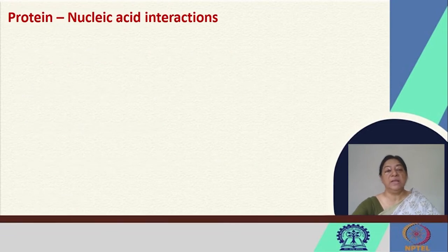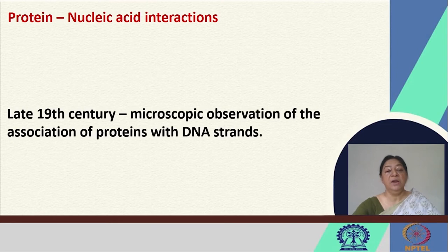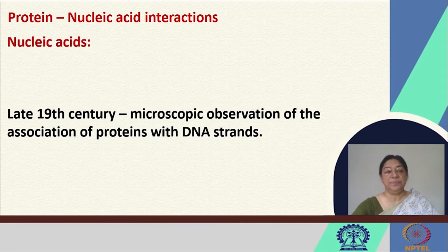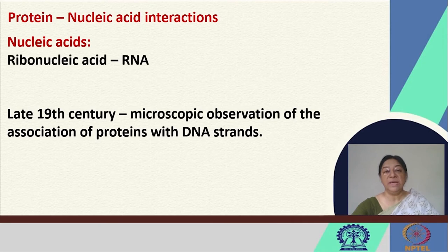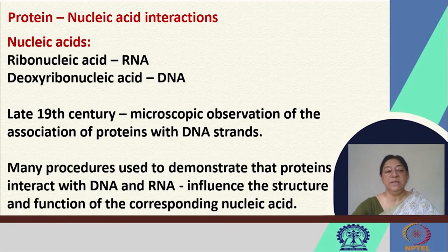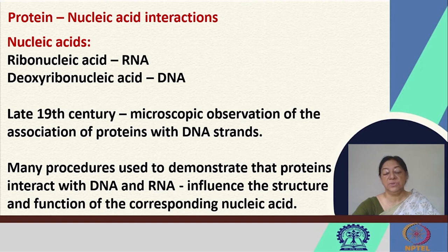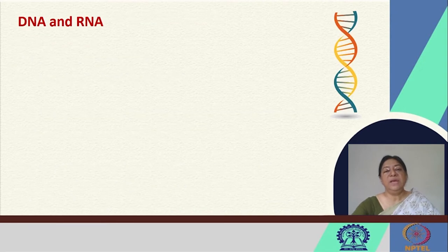Before we go into protein nucleic acid interactions, it was discovered late in the 19th century that there were microscopic observations of association of proteins with DNA strands. Looking at these nucleic acids, we have ribonucleic acid (RNA) and deoxyribonucleic acid (DNA). There are many procedures now used to demonstrate that proteins do interact with DNA and RNA, and during the interaction they influence the structure and function of the corresponding nucleic acid. We will look briefly at the structures of DNA and RNA and see how they are important in interaction with proteins.